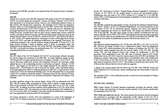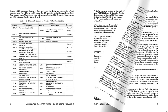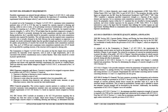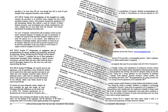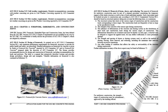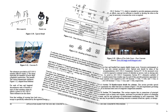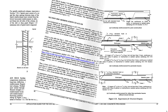Part 1 also provides a section-by-section description of Chapter 19 of the code and corresponding sections in its reference standard, which are simply referenced by the code without any modifications. Numerous tables and figures are used throughout this publication to better summarize and illustrate the applications.